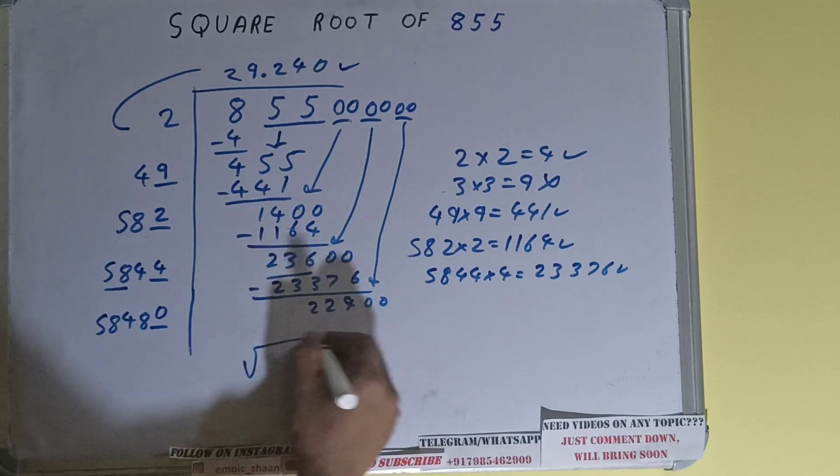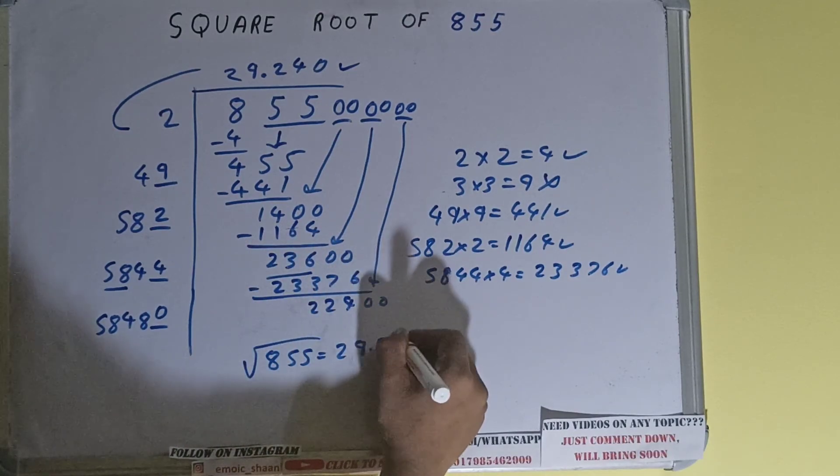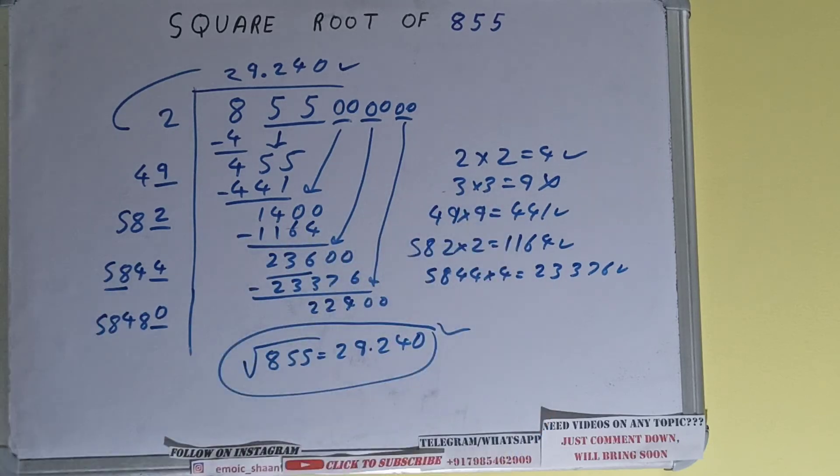So square root of 855 will be 29.240 and that would be the answer. So this is all. If you found the video helpful please hit the like button, do consider subscribing, and thanks for watching.